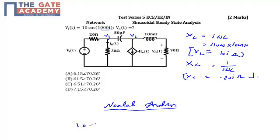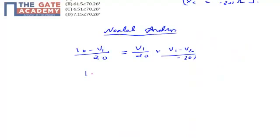So my equations are: 10 minus v1 upon 20 equals v1 by 20 plus v1 minus v2 by minus 20j. Now if I simplify this, 10 will be equal to (2 plus j) times v1 minus 2j plus j times v2. This is equation number 1.